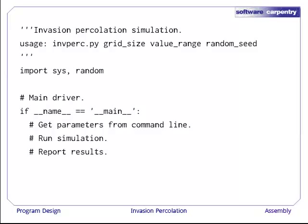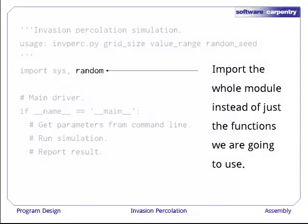Here's the first code that we write. We start with a documentation string to remind ourselves of what this program does. We import the libraries we need, and then we create the main driver. Note, we're importing the entire random number generation library instead of just the two or three functions that we need. This will make things easier to understand in future when we come back to revise the program.